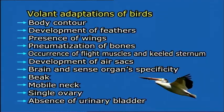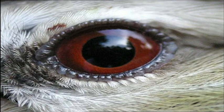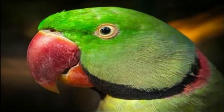Air sacs also help in internal perspiration, thus helping in regulation of body temperature. Brain and sense organ specificity: the cerebrum is well developed and optic lobes become enlarged for controlling the great development of sight, while olfactory lobes are reduced, meaning the power of smell is reduced. Birds' eyes are large and bear characteristic sclerotic plates to resist variable air pressure. Eyes also contain pectines, which are comb-like vascular and pigmented structures to regulate fluid pressure within the eye.